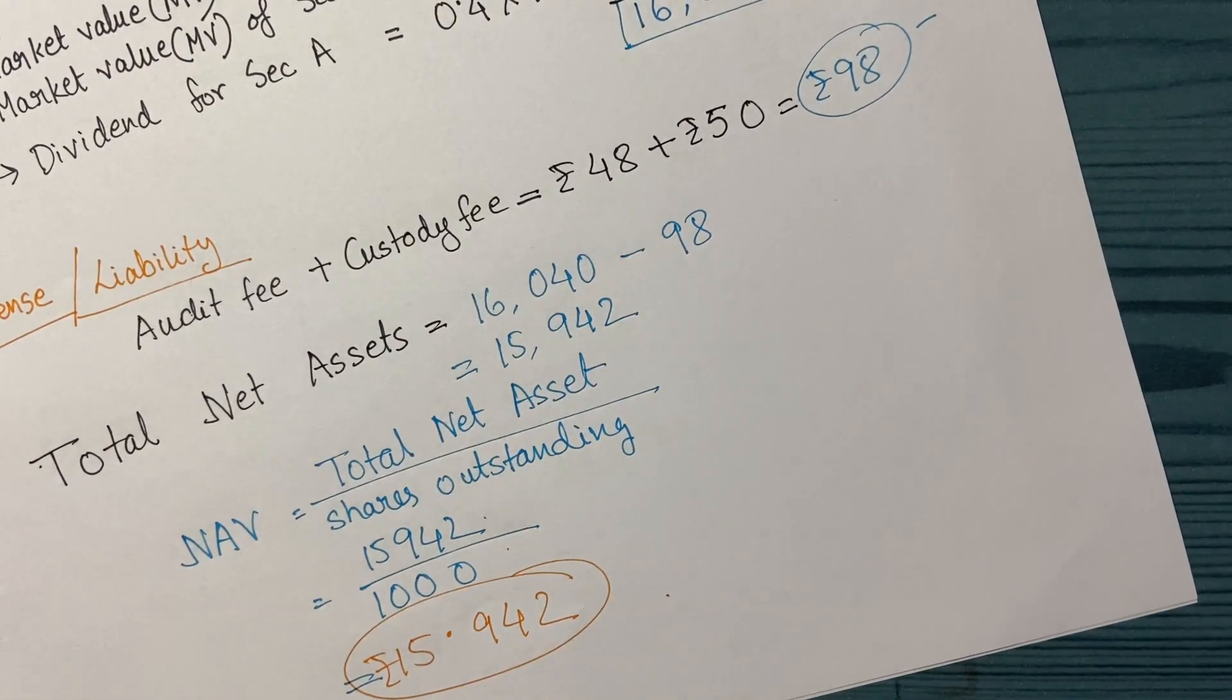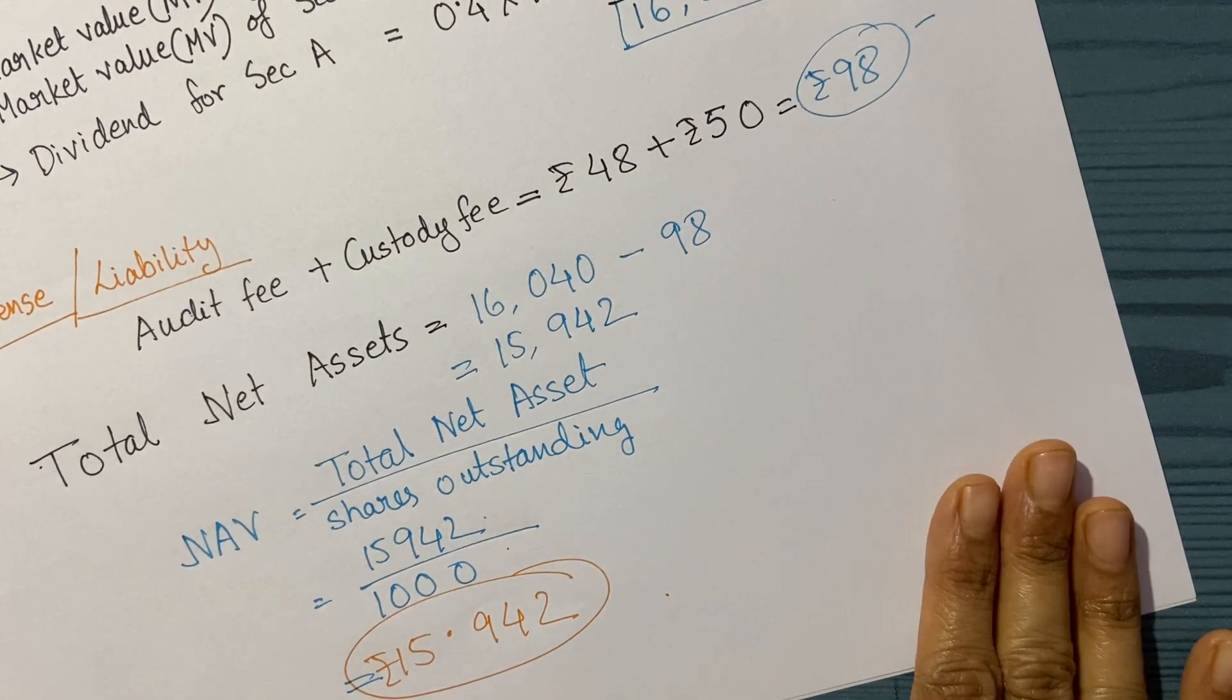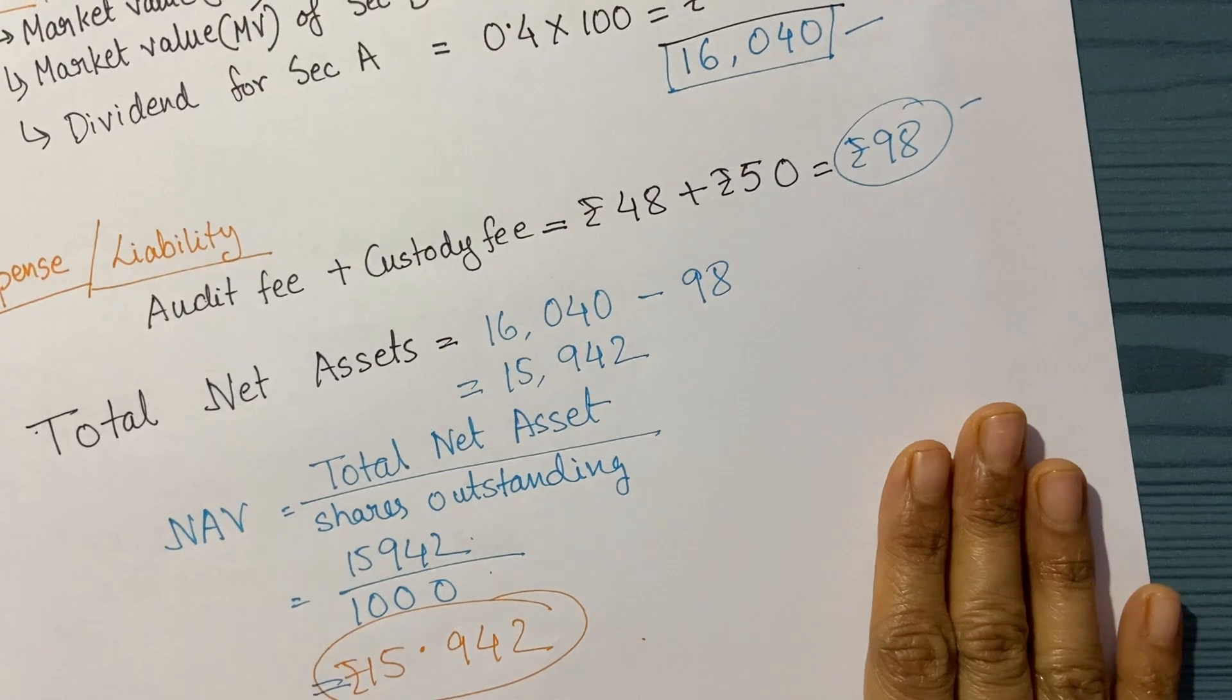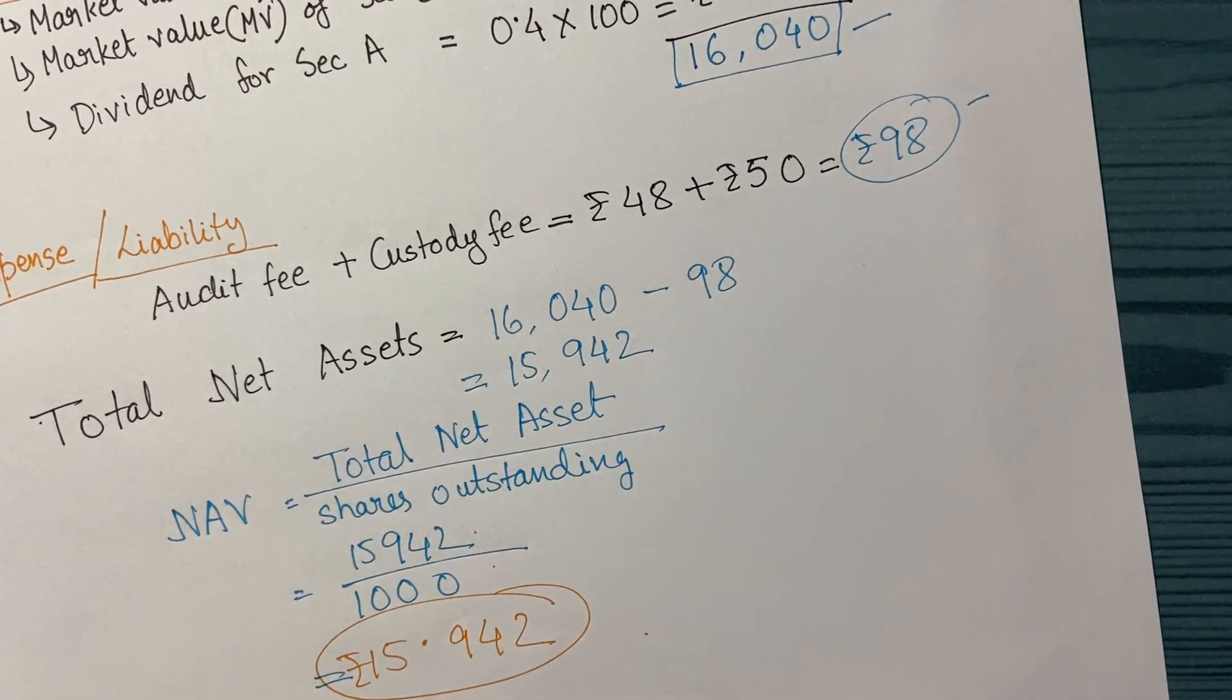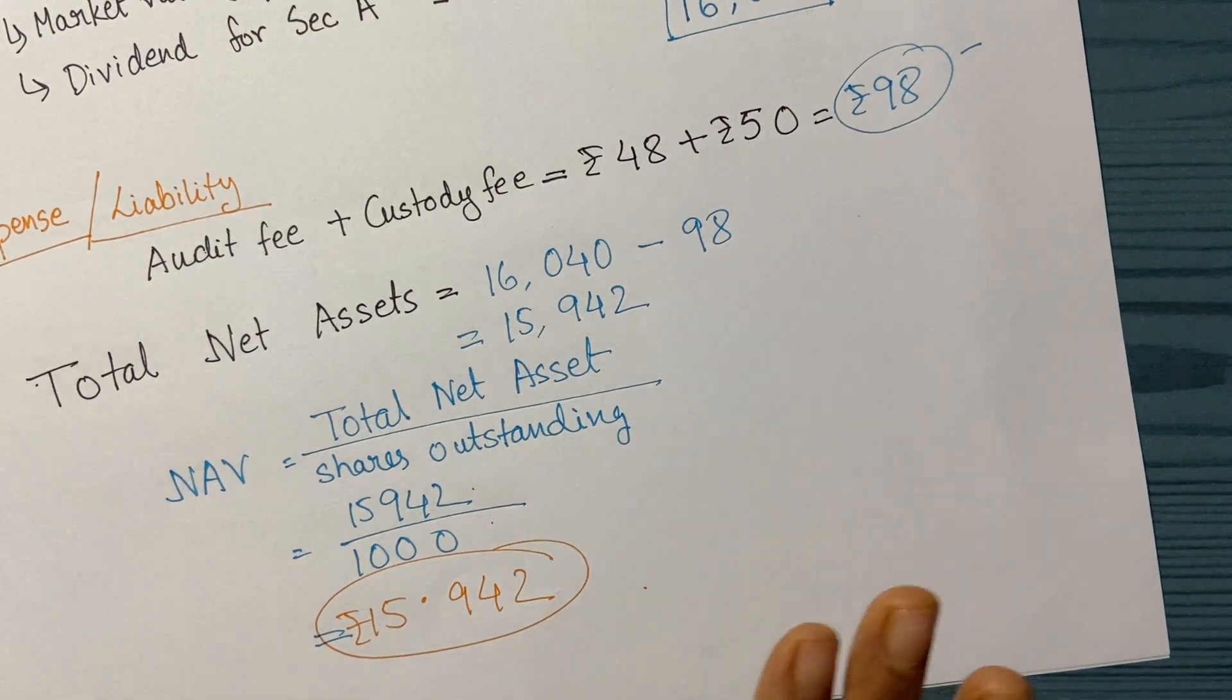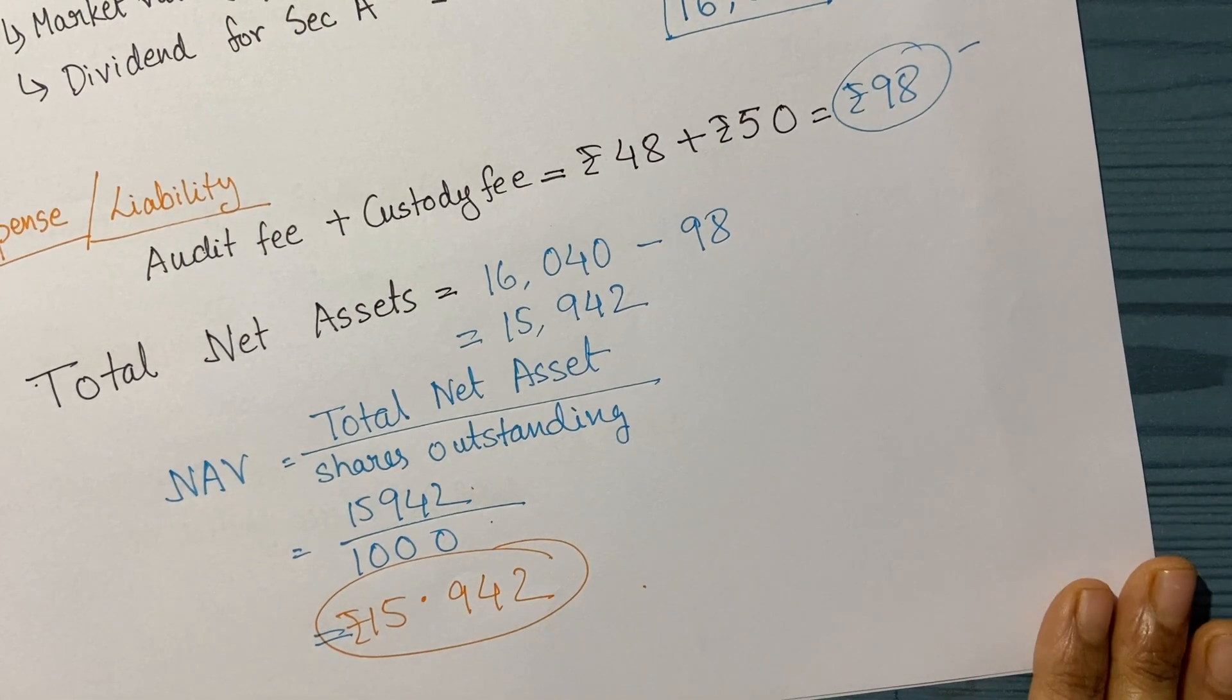This is how we arrive at the NAV—a very basic example of NAV calculation. There are many different factors that can impact NAV, and we can explore more corporate actions and discuss how these other factors impact the NAV. Thank you very much.